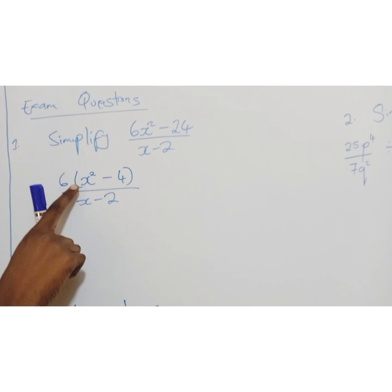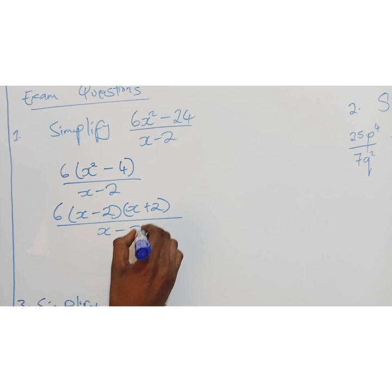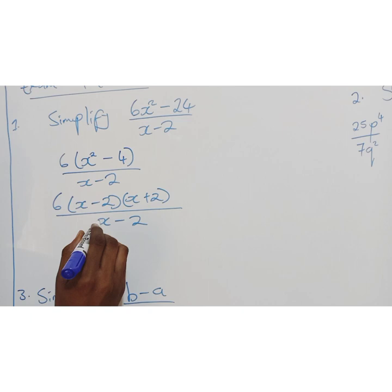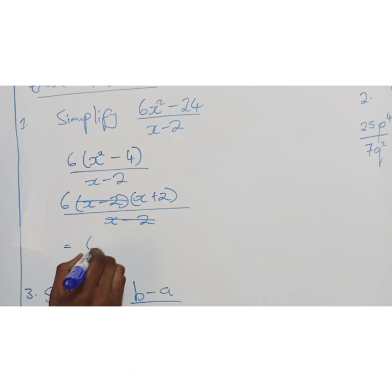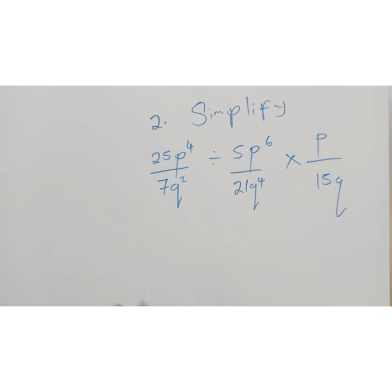Over x minus 2. We haven't fully factorized this. This is a difference of 2 squared. So we have 6, then x minus 2, then x plus 2 over x minus 2. So what we do here, we cross what is common. This is common and this is common. You cross them, you cancel them. So your final answer is 6, then x plus 2. Simplification always goes with factorization.